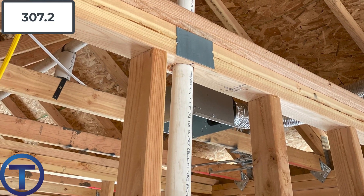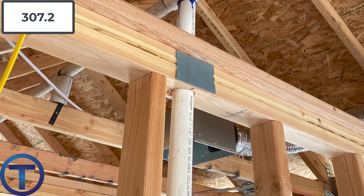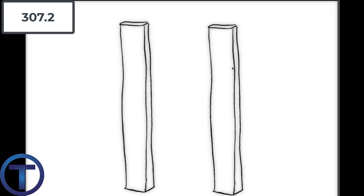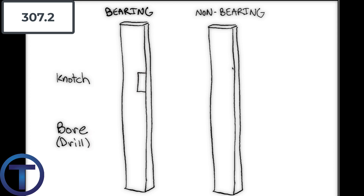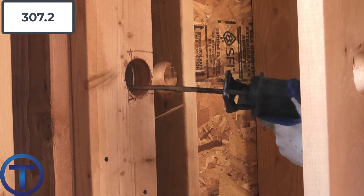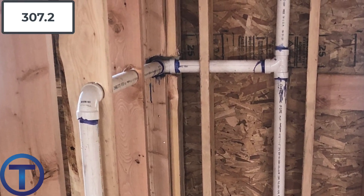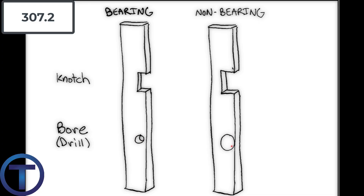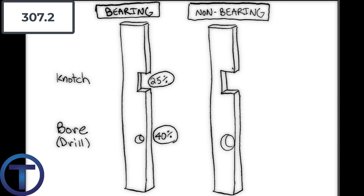A good way to identify a bearing wall is two boards on the top plate. Building codes only allow us to drill or notch bearing and non-bearing studs for a certain amount. Notching is where you cut into the side with a sawzall and remove a section. Boring or drilling a hole is the better option because it leaves more strength. In a bearing wall you can notch 25% and bore or drill 40% of the stud. On a non-bearing stud you can notch up to 40% and bore or drill 60% of the stud.